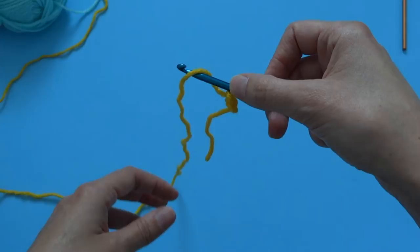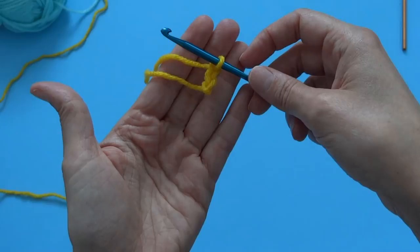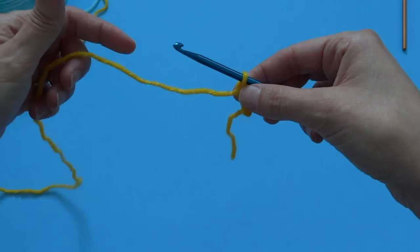So you take your working string, you wrap it around your hook, and try to hold on to the work that's on your hook, and you use your hook to pull that yarn through the loop. Alright, that's two chains.